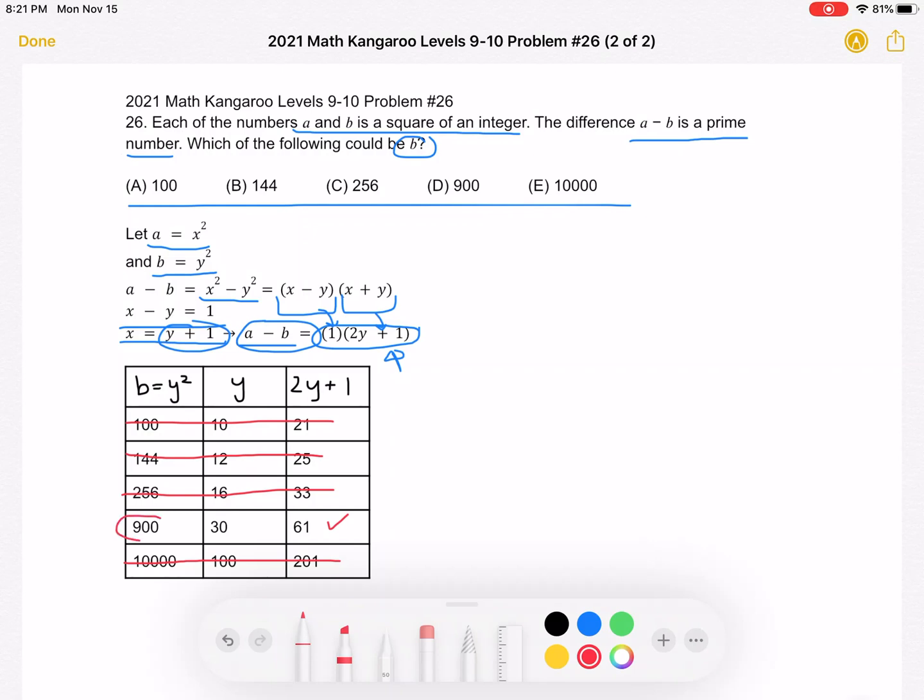So B should be equal to 900. That is answer choice D. Thank you so much for watching, and please subscribe if you'd like to see more videos.